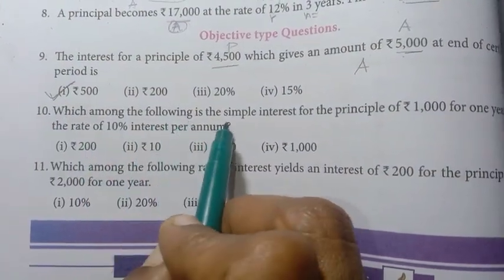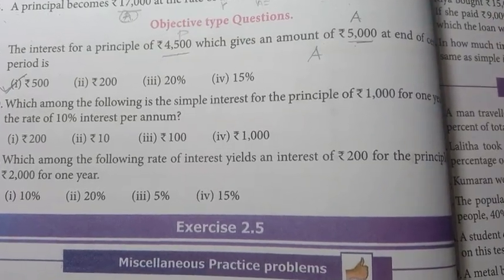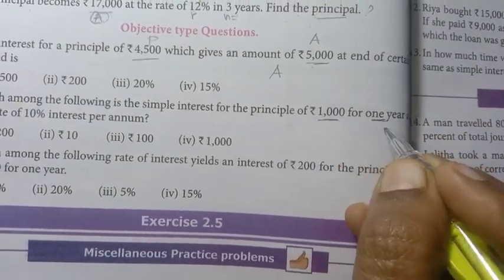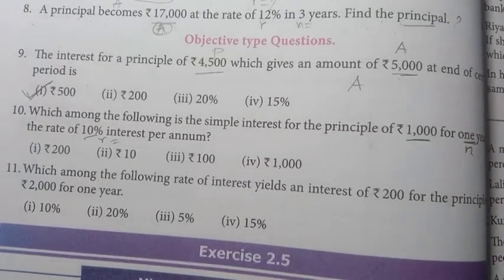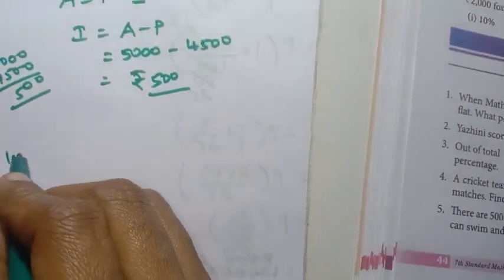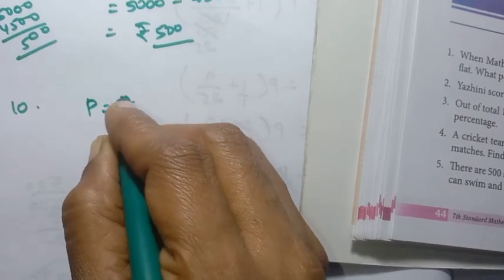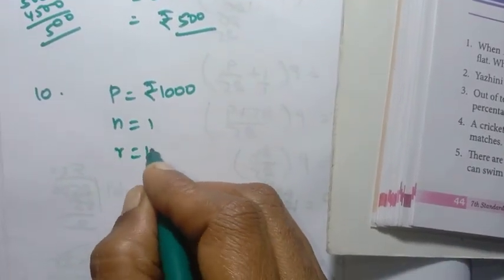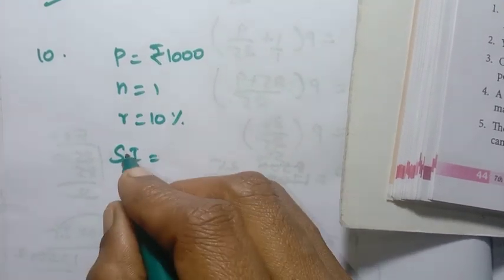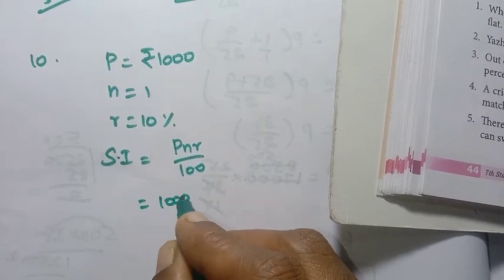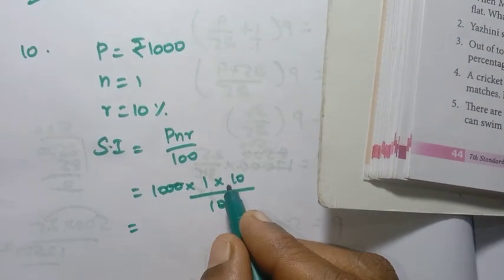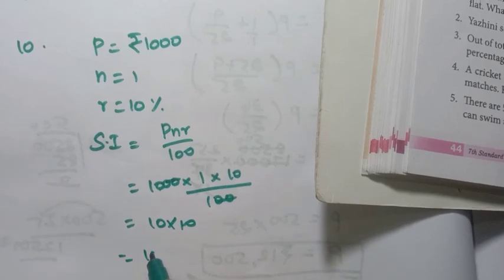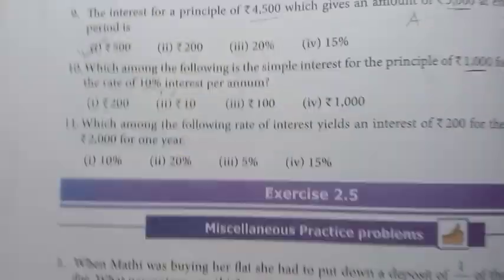Tenth question: Which among the following is the simple interest for the principal of Rs.1,000 for 1 year at 10%? Principal P = 1,000, N = 1 year, R = 10%. SI = PNR by 100 = 1,000 into 1 into 10 by 100 = Rs.100. The third option is the right answer.